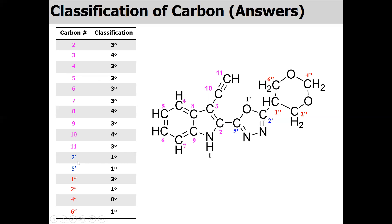In the other ring, carbon number two-prime and five-prime are both one degree carbons — each is bonded to only one carbon, while on either side we have oxygen or nitrogen, which are not carbons. In the third ring, carbon four-double-prime is a CH₂ with oxygen on both sides. This carbon is not directly attached to any carbon, so it is known as super-primary carbon or zero degree carbon. That is how we classify every carbon atom individually.